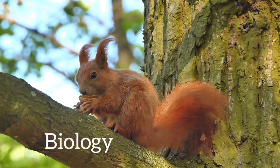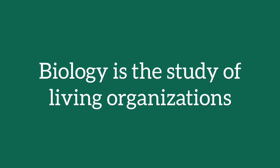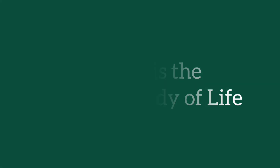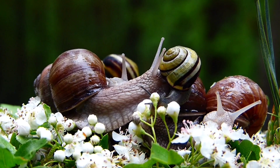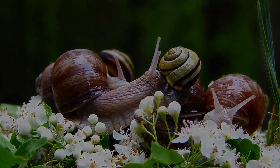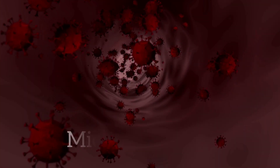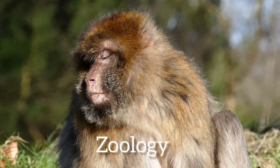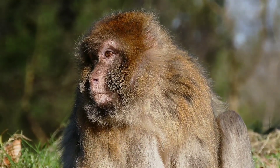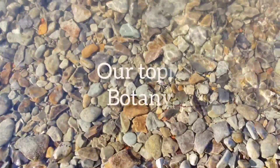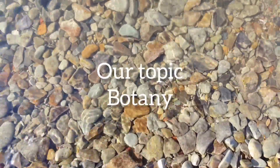Let's start with biology. What is biology? Biology is the study of living organisms, or it is the scientific study of life. There are three main branches of biology: botany, zoology, and microbiology. Microbiology is the study of microorganisms, zoology is the study of animals, and botany is the study of plants.